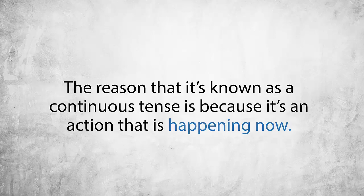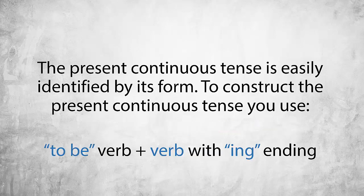The reason that it's known as a continuous tense or a progressive tense is because it's an action that is happening right now. The present continuous tense is easily identifiable by its form. In particular, if you see an ING verb, you need a to-be verb and a verb with an ING ending.